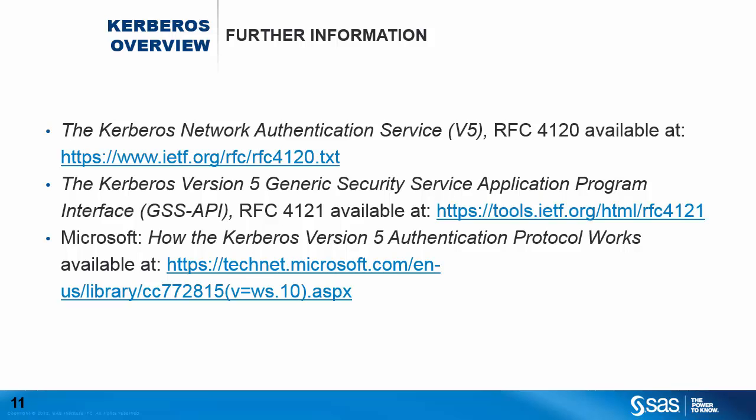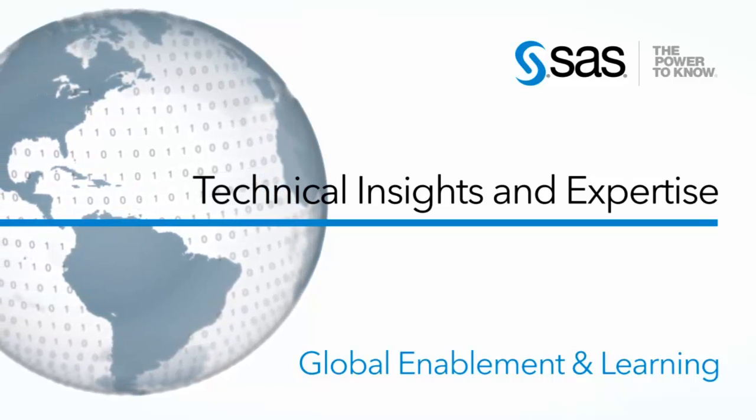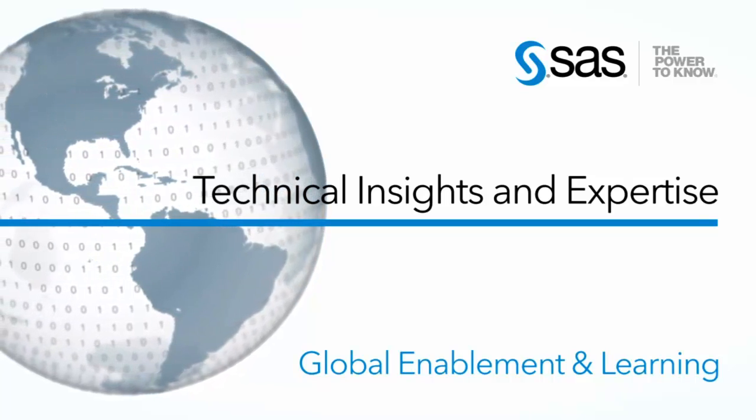Hopefully this has given you a good overview of the messages and use of encryption within the Kerberos authentication protocol. Remember, the encryption algorithms used in the different parts of the messages are exchangeable, so it's important that the different parties are using algorithms that both sides can process. Also, since the authenticators seen in most requests often include a timestamp, ensure the system time is synchronized across all parties. Thank you, and check back with your global enablement and learning team for more technical insights.